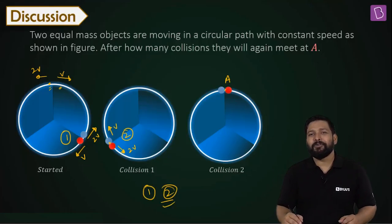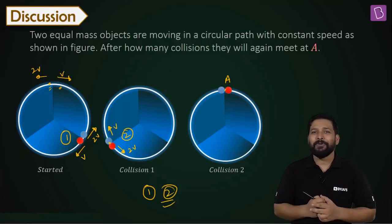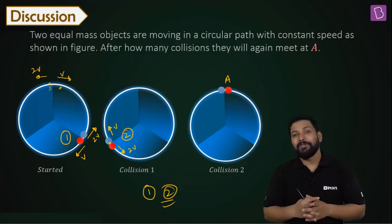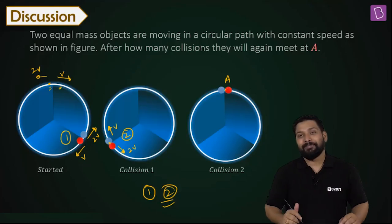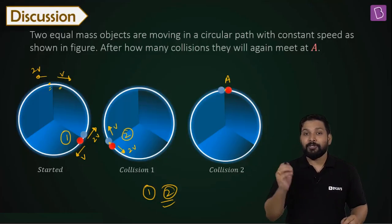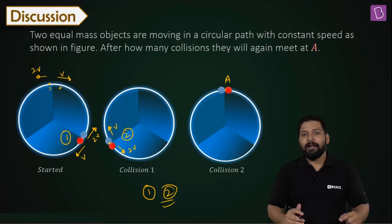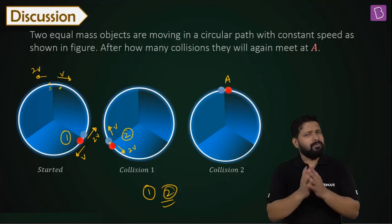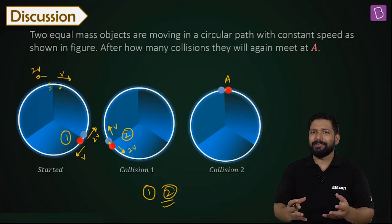So how many collisions before they meet again at point A? Two. And for those of you who have answered two, well done guys. Good job. You have understood the core of this concept. Well done. And for those who did not get it, alright, no problem. You learned something.